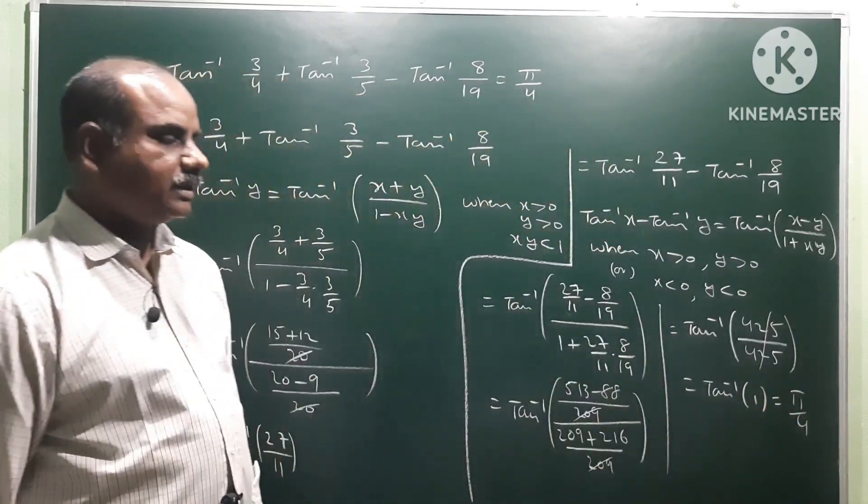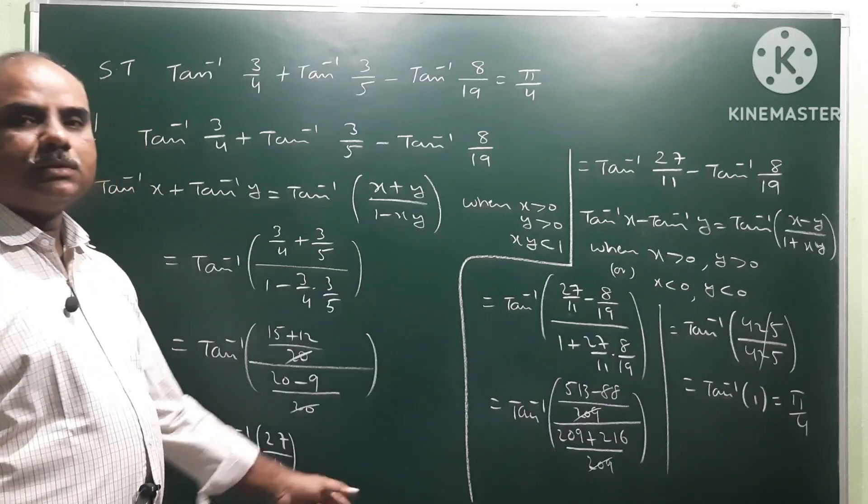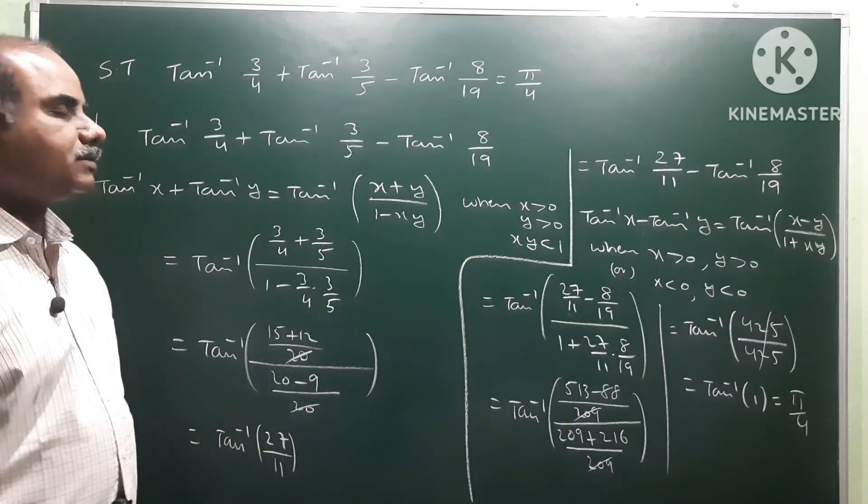which is equal to pi by 4. So tan inverse 1 means tan theta equals 1, which is 45 degrees. So that is the answer.